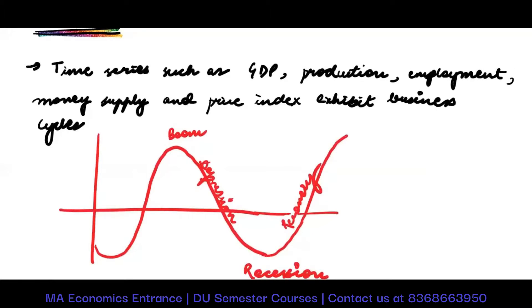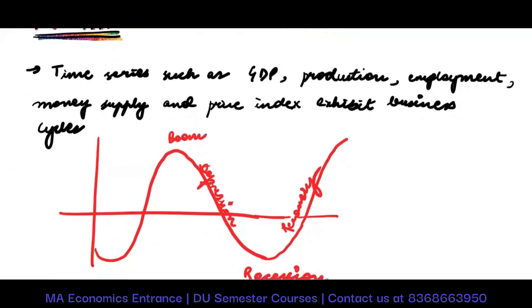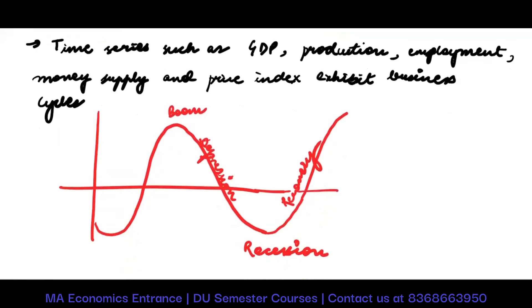Whatever kind of business cycle is there in the economy — at what phase of the business cycle the economy currently is — that is going to affect the variable values. If I'm in a period of boom and sustain that for two years, output would be affected by the previous values of output. Then if I'm in a period of recession, for the next few years output values would be affected. So there is this dragging force to these variables.